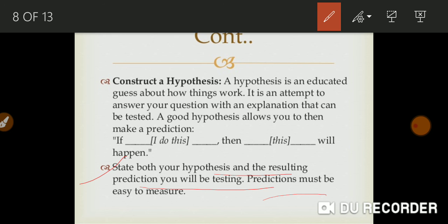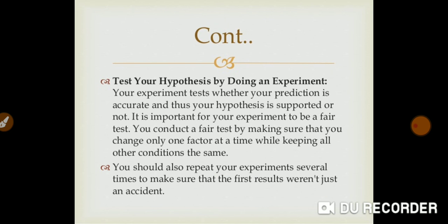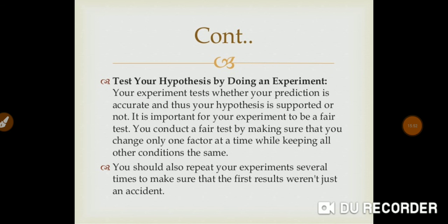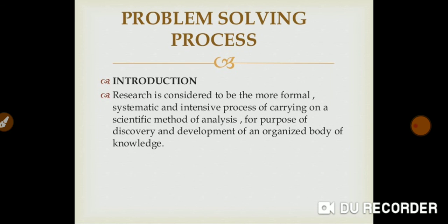For example, now we will taste the vegetables - I will say the vegetables are good, and if they are not good, I will say they are not good. Whatever results come, we will report exactly that. Next is to test your hypothesis by doing an experiment. This has already been explained, so there is no need for further explanation here.